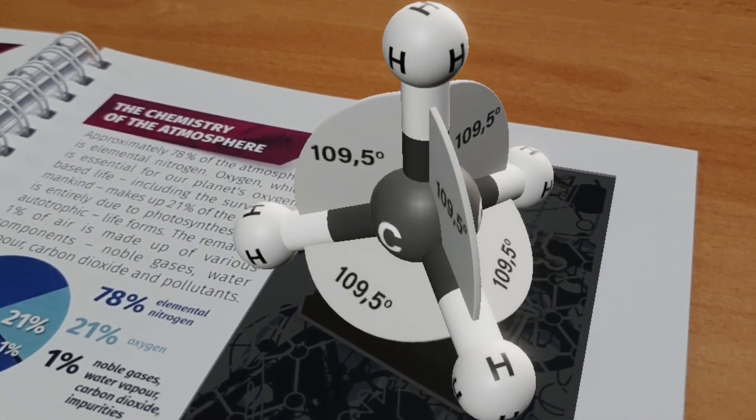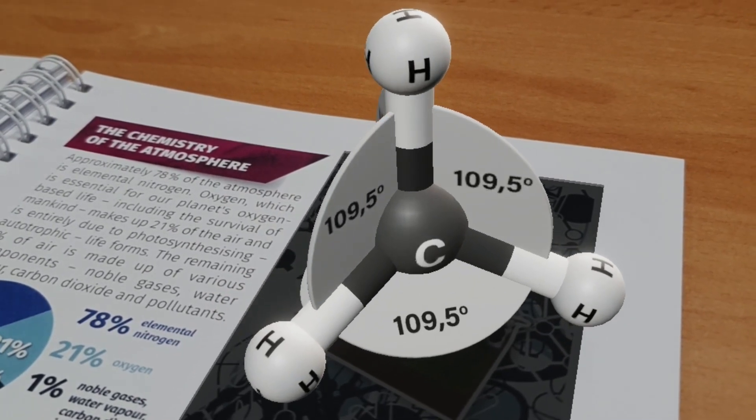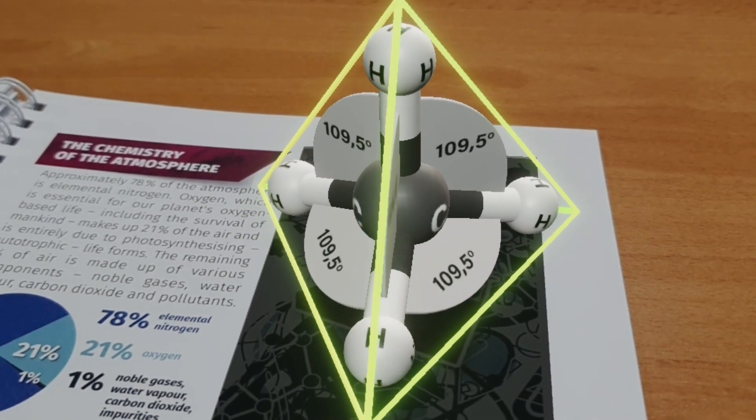The four pairs of bonding electrons are connected to the central carbon atom at an angle of 109.5 degrees, creating a tetrahedral structure.